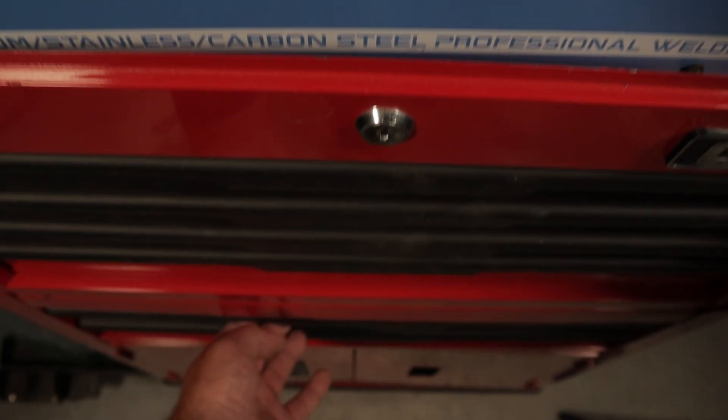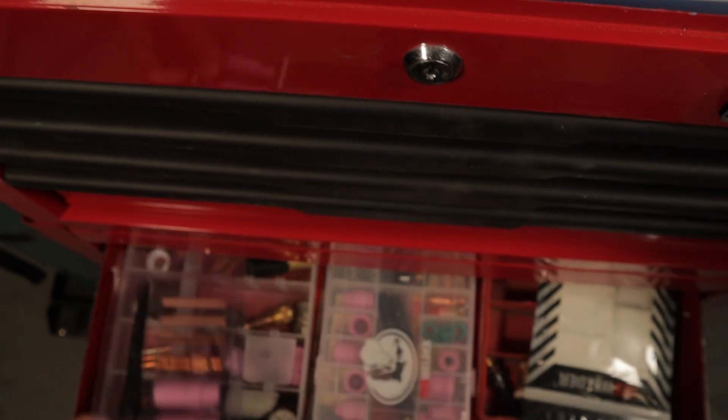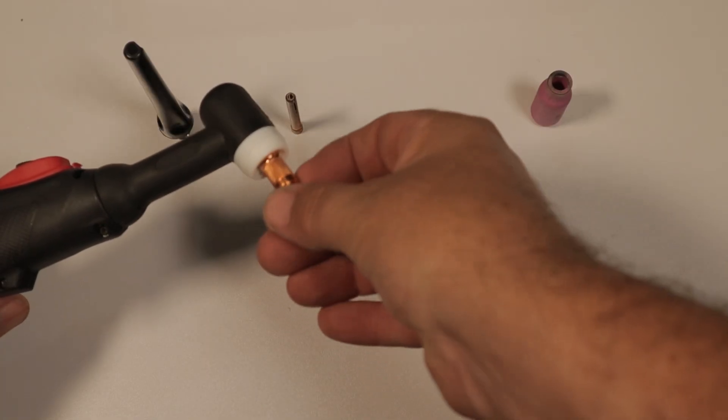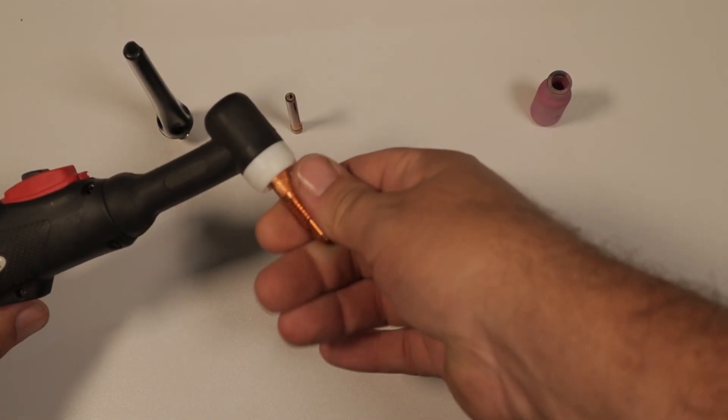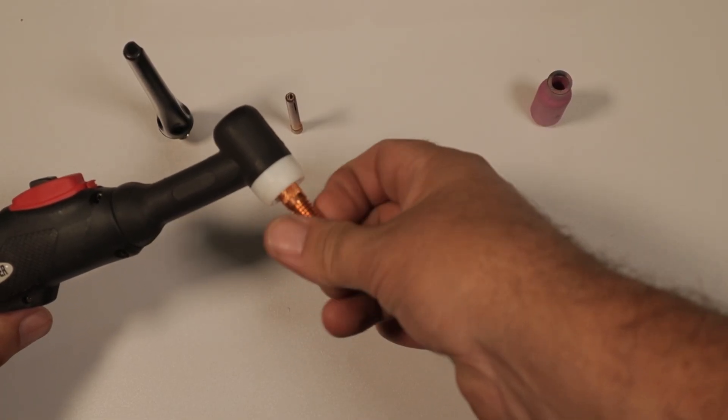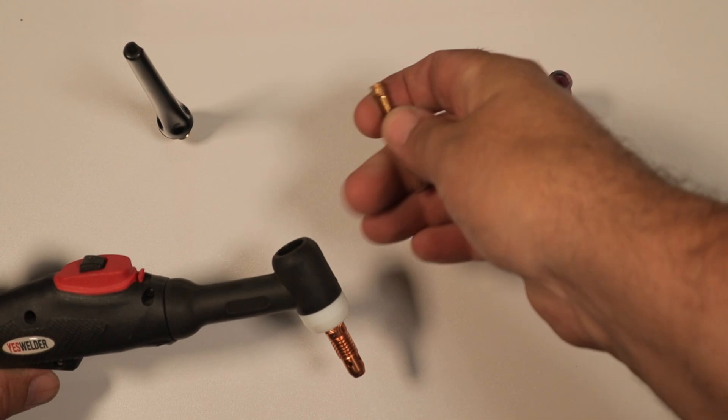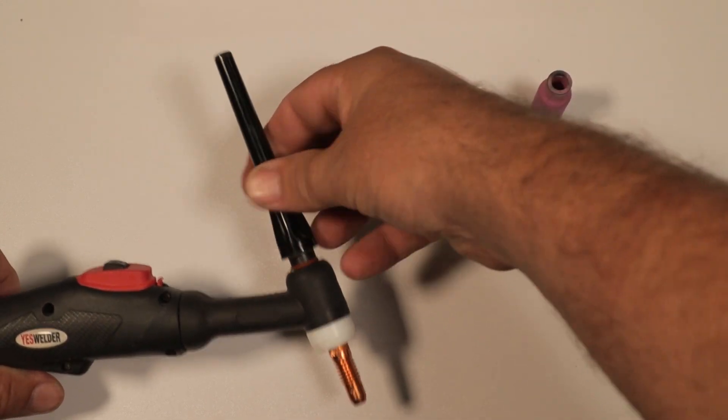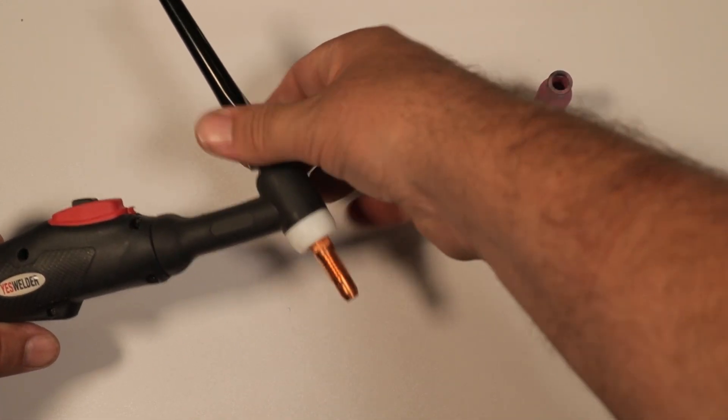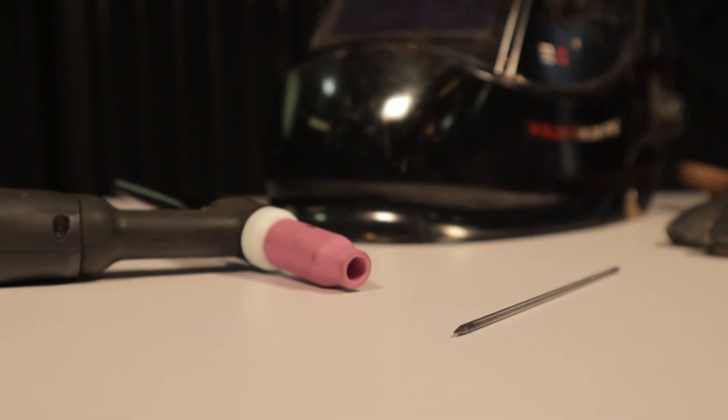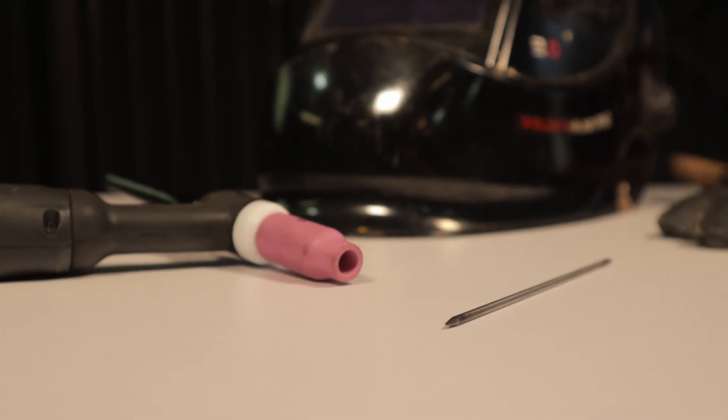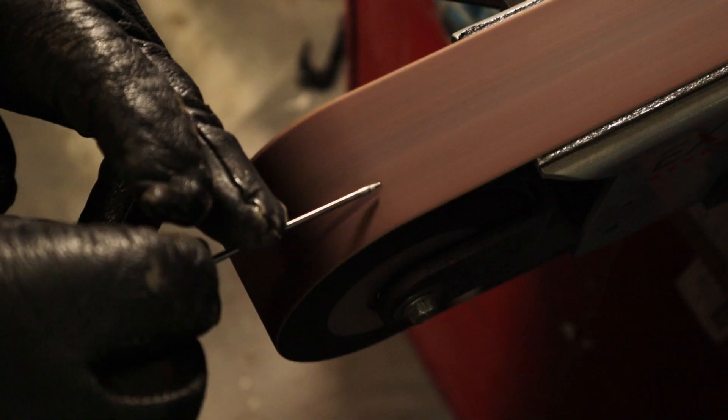First off is the torch. I decided to use the standard type torch setup, a regular 3/32nd or 2.4 millimeter collet body with the collet that came with the machine. I'm using a 2% lanthanated tungsten. This is the only size and type of tungsten I use for all the welding I do at home, plus 90% of the welding at work. It can weld everything except the crack of dawn.